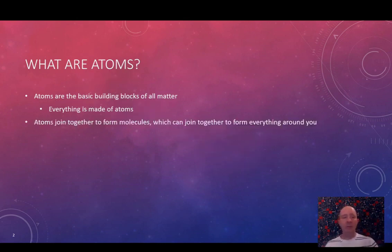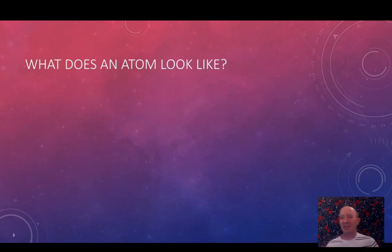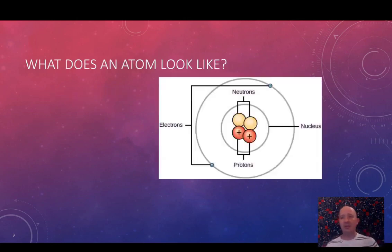So atoms join together to form molecules, and then those molecules join together to form everything around us. So what does an atom actually look like? It doesn't look like a Lego. It looks kind of different. So here's a drawing of an atom.